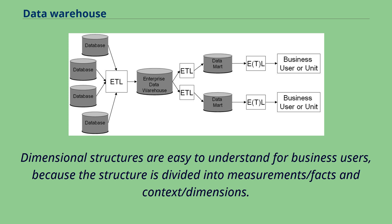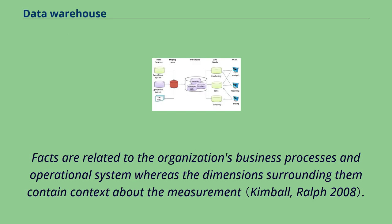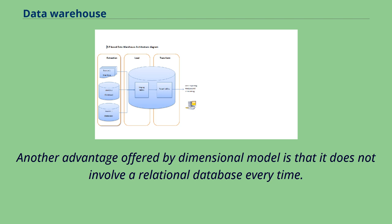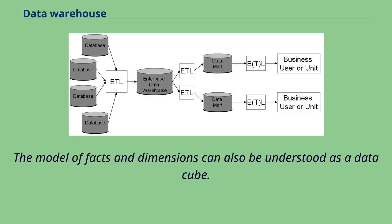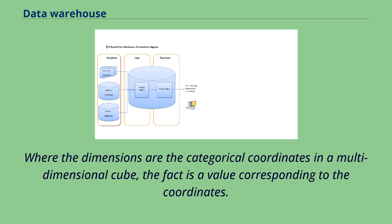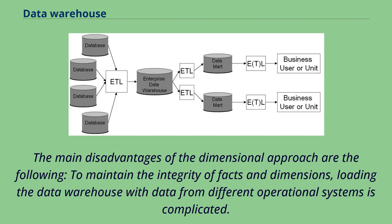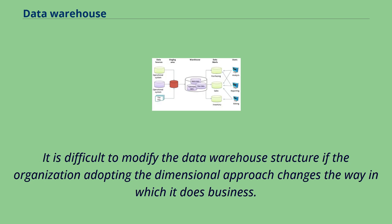Dimensional structures are easy to understand for business users because the structure is divided into measurements/facts and context/dimensions. Facts are related to the organization's business processes and operational system, whereas the dimensions surrounding them contain context about the measurement. The dimensional model does not involve a relational database every time, making it very useful for end-user queries in a data warehouse. The model of facts and dimensions can also be understood as a data cube, where the dimensions are the categorical coordinates and the fact is a value corresponding to the coordinates. Main disadvantages include complexity in loading data from different operational systems and difficulty modifying the data warehouse structure if the organization changes the way it does business.